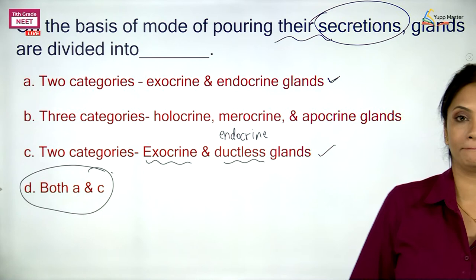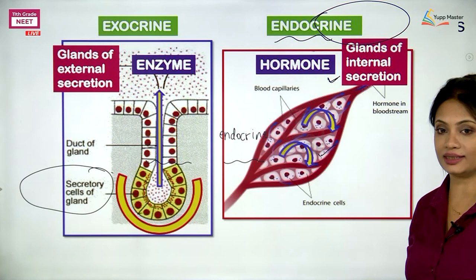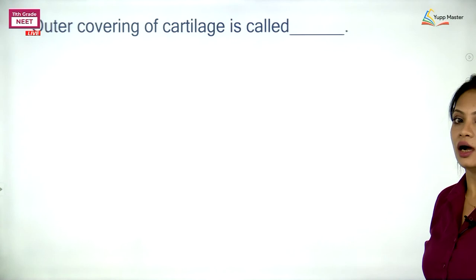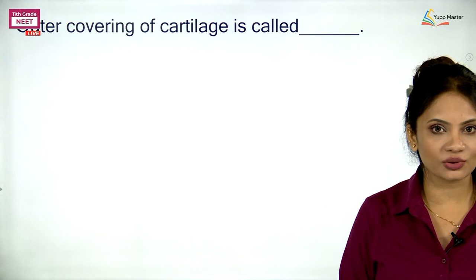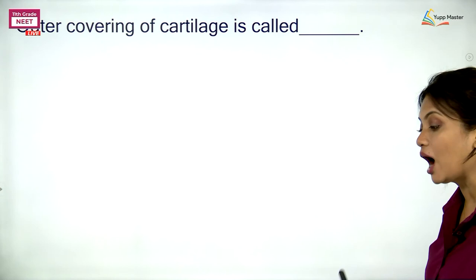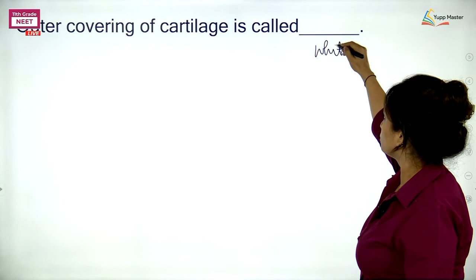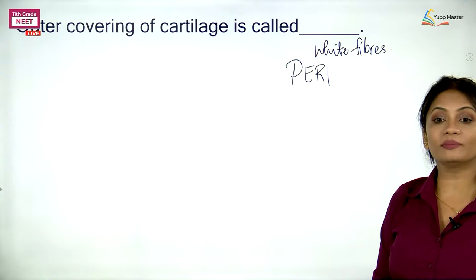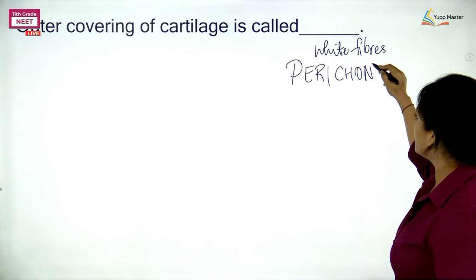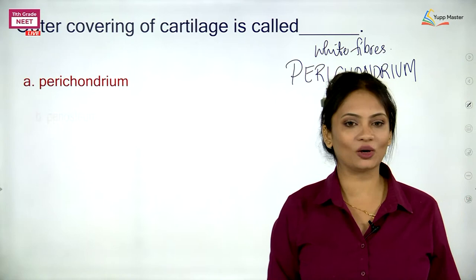The outer covering of cartilage is called — do you remember? For cartilage we use the word chondro, and for all around we use peri. So the answer is perichondrium. The major protein of connective tissue is — is it myosin, collagen, melanin, or keratin? Connective tissue has fibres and fibroblasts, and the major protein in those fibres is collagen. The correct answer is collagen. This question was asked in AIIMS exams.